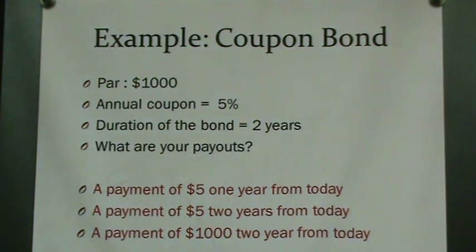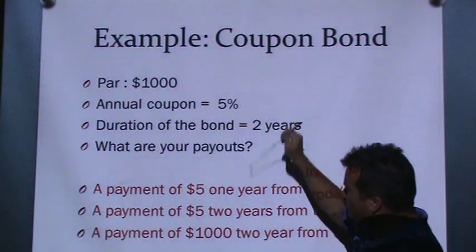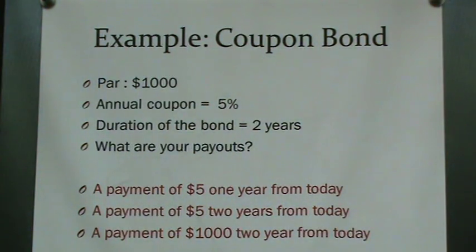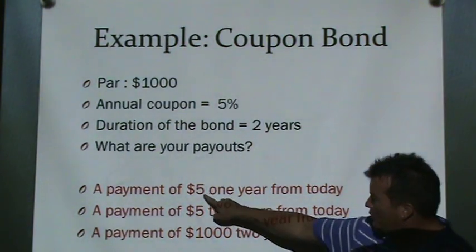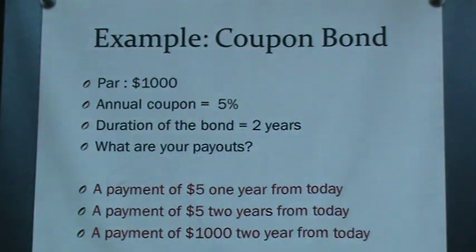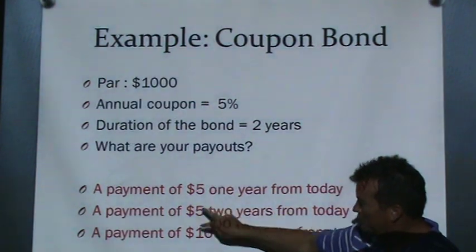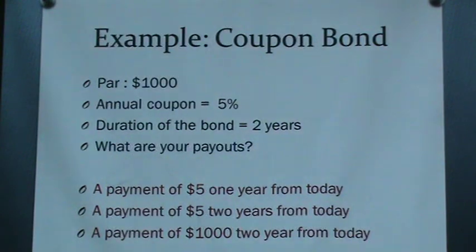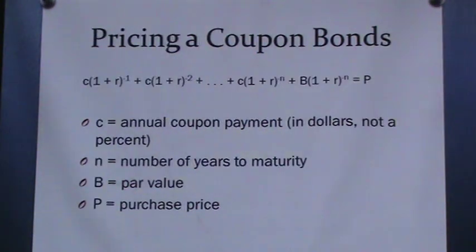Now let's do a coupon bond. Suppose the par is $1,000, the interest rate is 5%, the duration is two years, and it pays an annual coupon. One year from today you receive $50 — that's 5% of $1,000. Two years from today you receive $50 plus your original $1,000 back, so $1,050. So you pay $1,000 today, get $50 next year, then $1,050 the following year, and then you're done. That investment has an internal rate of return of 5%.